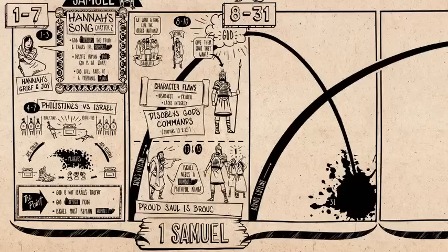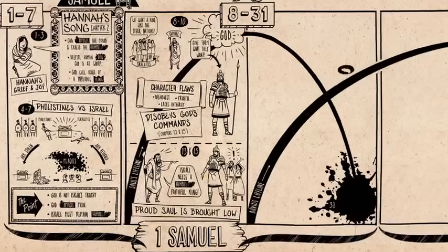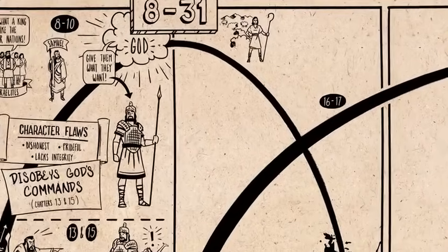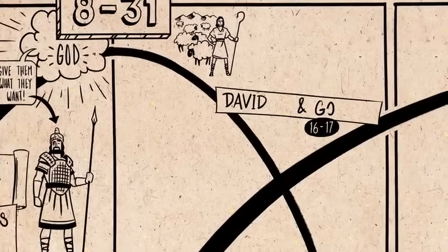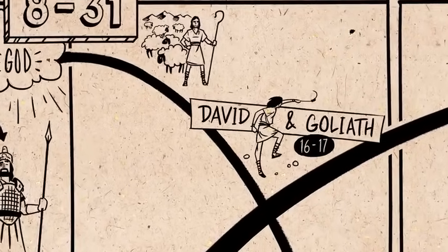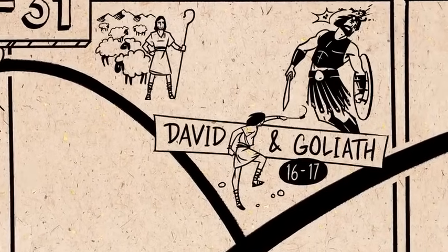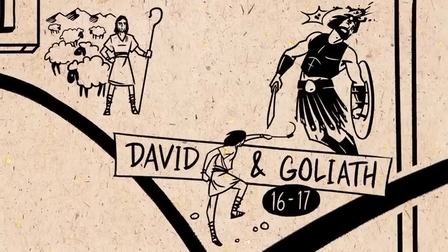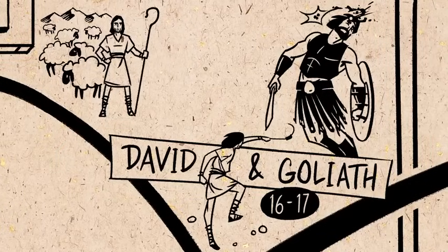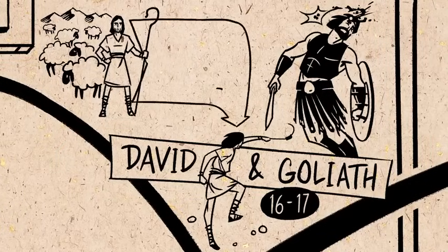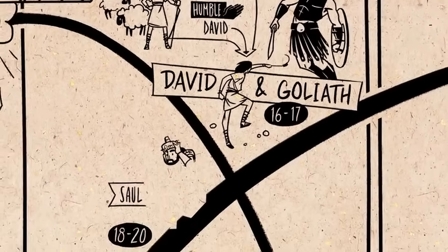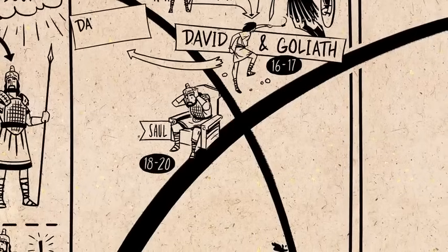Saul's downfall begins as God works behind the scenes to raise up a new king — an insignificant shepherd boy named David, the least likely candidate. But the famous story of David and Goliath shows that God's choice of David is not based on his family status, but simply on his radical and humble trust in the God of Israel. This story embodies all the themes of Hannah's poem: proud Saul and Goliath are brought low while humble David is exalted.